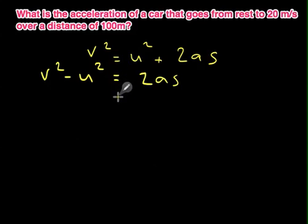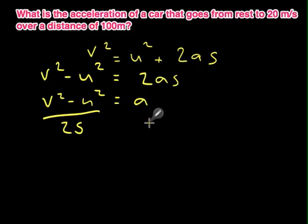I'm keeping the equal signs underneath each other. So the next step is to separate the 2S from the A. They are multiplied by on the right-hand side, so when I bring them to the left, they become divide. So I end up with v squared minus u squared divided by 2S being A.